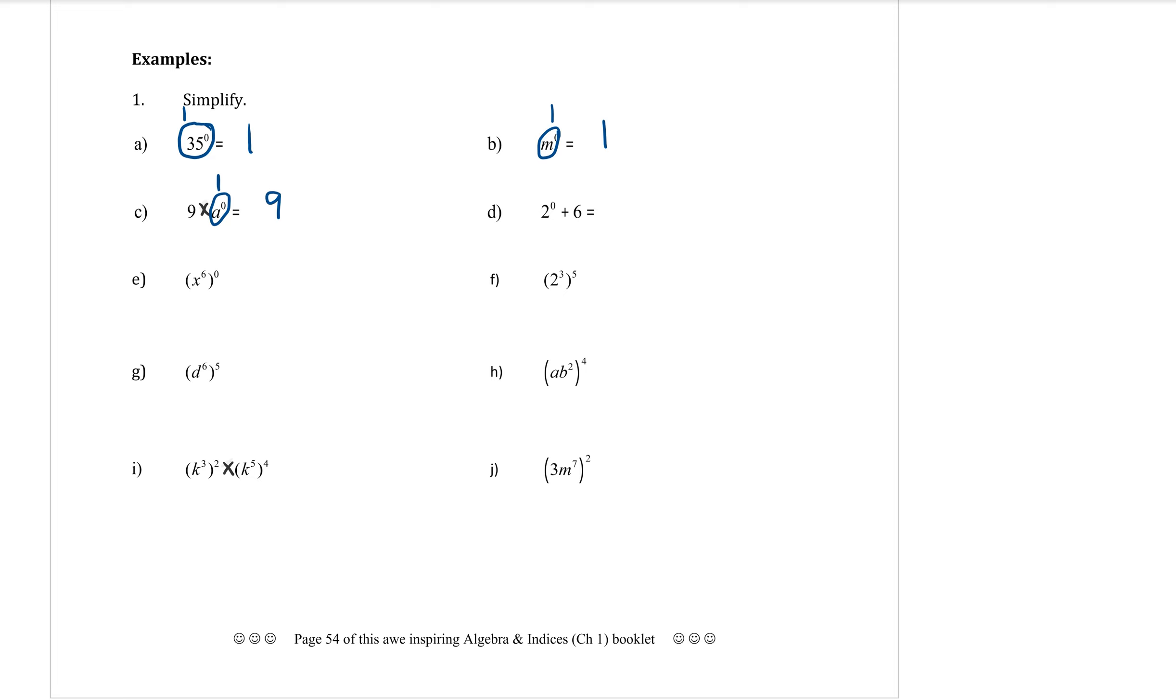Part D. Two to the power of zero plus six. I have a power of zero. So circle power of zero. That's going to be equal to one. One plus six is seven.